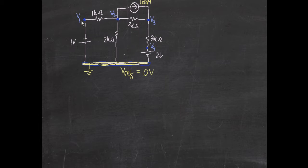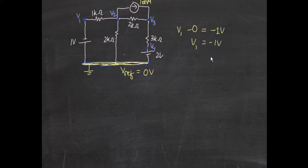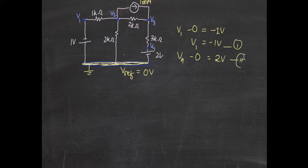Let's identify node v1. Since there is a voltage source between v1 and the reference node, v1 minus 0 equals minus 1 volt, so v1 equals minus 1 volt. Similarly for v4: v4 minus 0 equals 2 volts, because the voltage source between those two nodes is 2 volts. So v4 equals 2 volts.